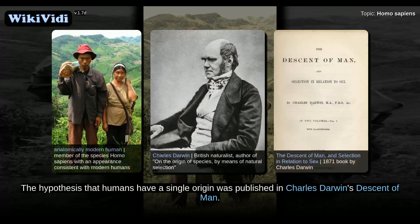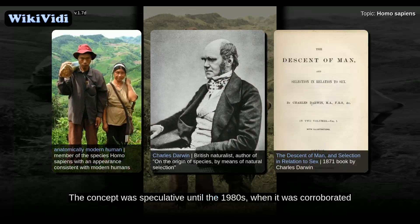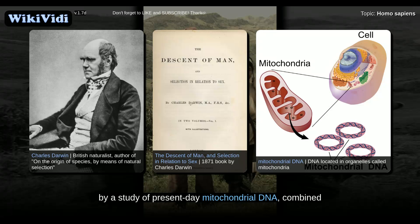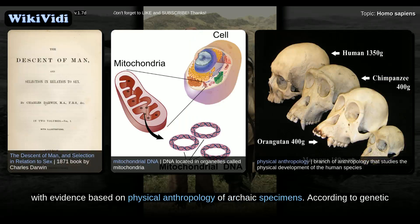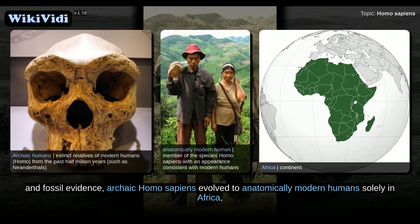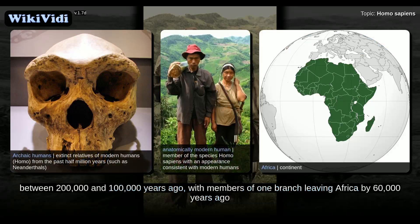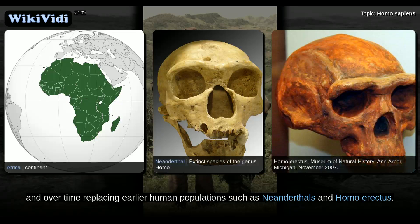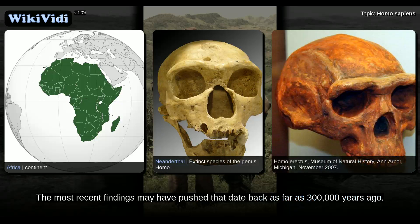The hypothesis that humans have a single origin was published in Charles Darwin's Descent of Man. The concept was speculative until the 1980s, when it was corroborated by a study of present-day mitochondrial DNA, combined with evidence based on physical anthropology of archaic specimens. According to genetic and fossil evidence, archaic Homo sapiens evolved to anatomically modern humans solely in Africa between 200,000 and 100,000 years ago, with members of one branch leaving Africa by 60,000 years ago, and over time replacing earlier human populations such as Neanderthals and Homo erectus. The most recent findings may have pushed that date back as far as 300,000 years ago.